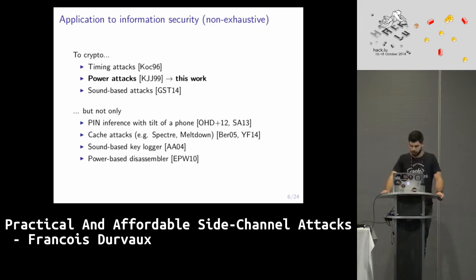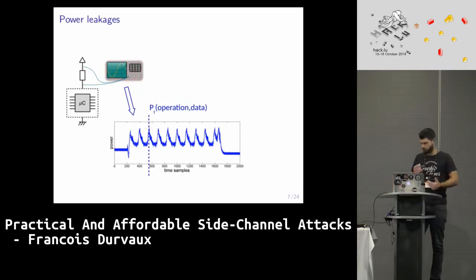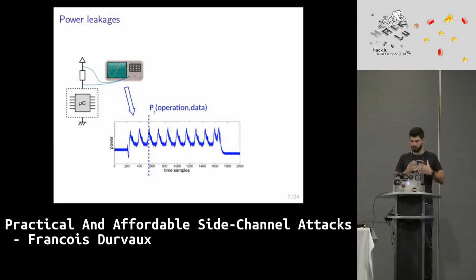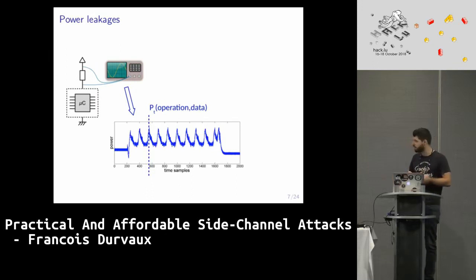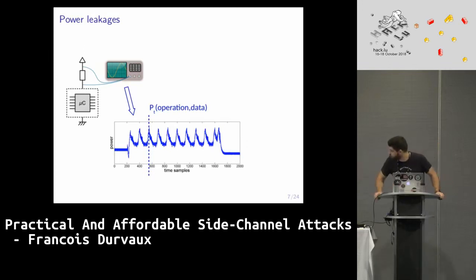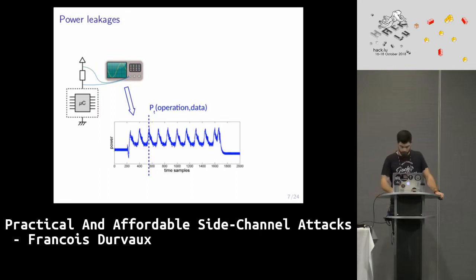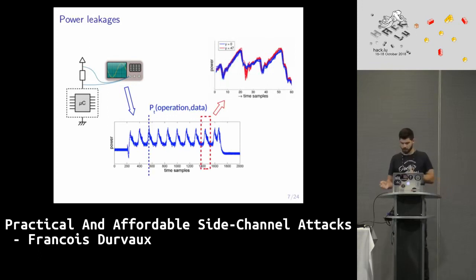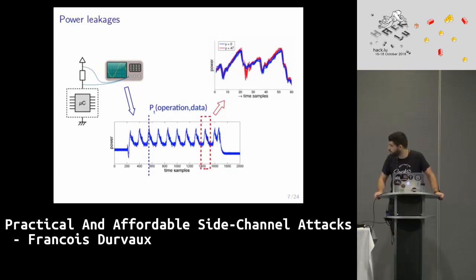In this talk we will focus on power attacks. For these attacks, we take advantage of power leakage — the fact that the instantaneous power consumption of a device depends on both the operation being executed and the data being processed. When you look at a power trace measurement of a cryptographic algorithm, you can clearly distinguish different sets at certain time samples, illustrating data dependency.